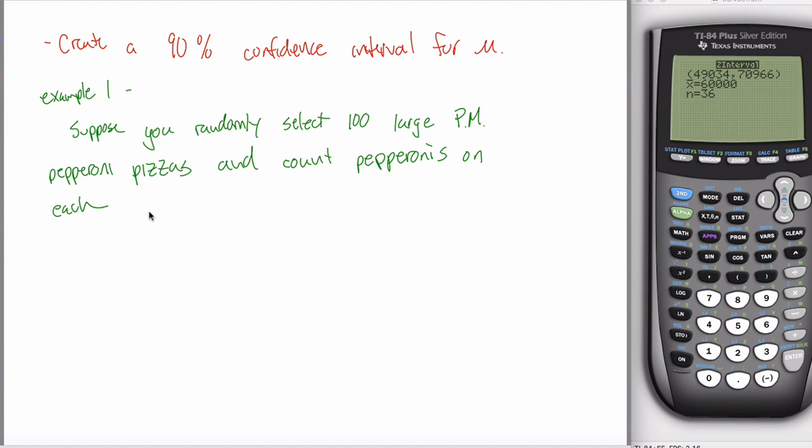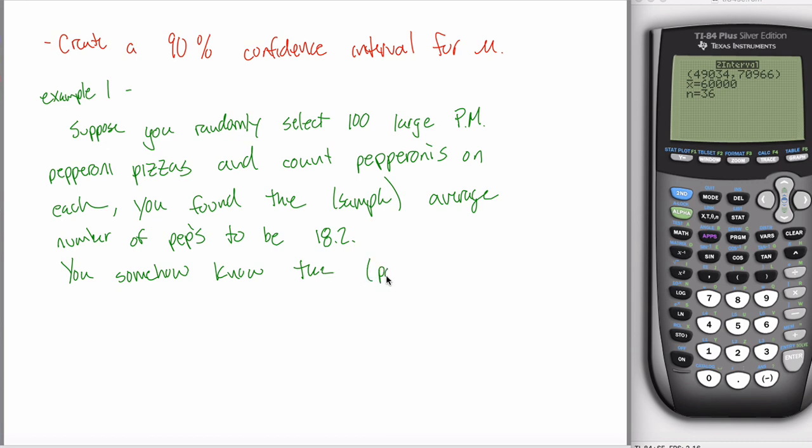Suppose you randomly select 100 large Papa Murphy's pepperoni pizzas and count pepperonis on each. So you can imagine some data here. The first pizza had 18. The next one had 19. The next one had 17. You can imagine a big list of data over here, 100 different numbers. In this one, we're not going to actually look at that data. We're going to suppose that somebody summarized that data already for you.